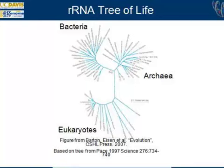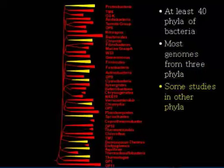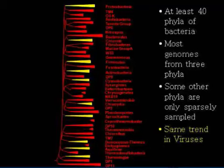The first thing I want to tell you about is better sampling. If you look at the ribosomal RNA tree of life and scan through it, we noticed about 10 years ago that for the bacteria, there were 40 or so named phyla, but most genomes came from just three of those phyla. The same poor sampling trend was seen in archaea, eukaryotes, and viruses — each lineage was poorly sampled in terms of available genome data.